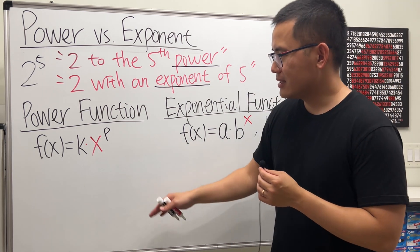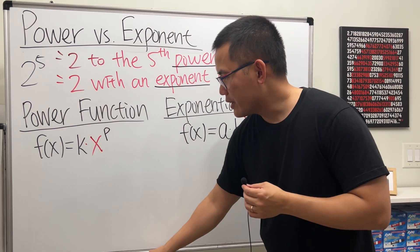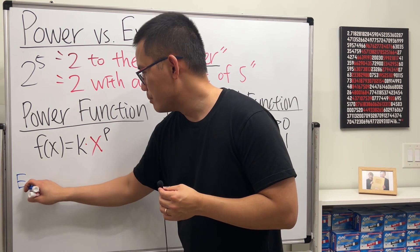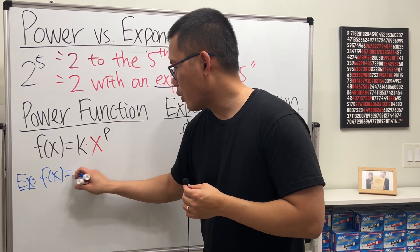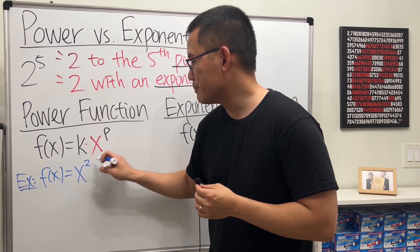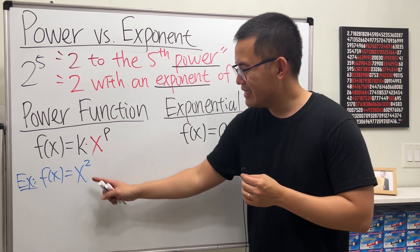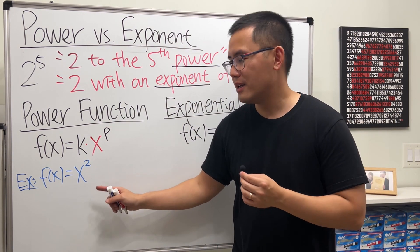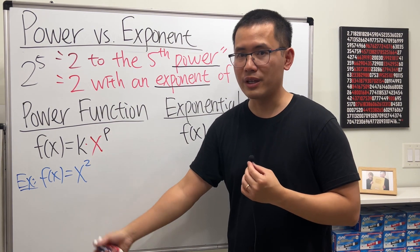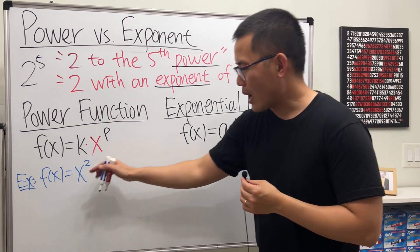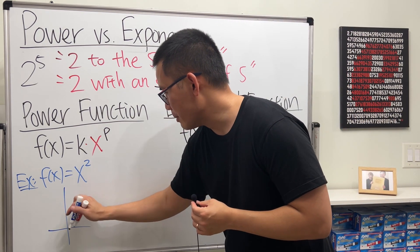And now, let me just show you guys some examples for this. Right here, let's talk about the most famous example. Let's say we have f of x equals x to the second power. This is a power function, but because the power is 2, we also know this as a quadratic. The graph of this is a parabola.